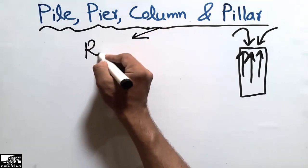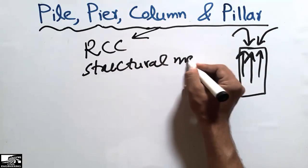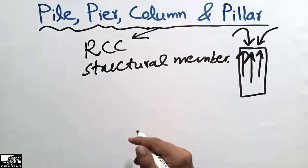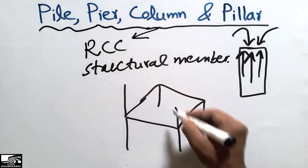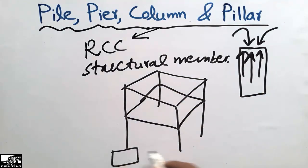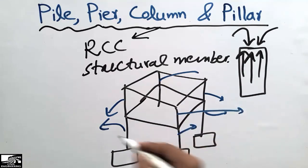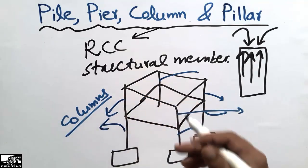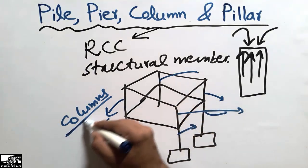Now the column can be defined as an RCC structural member used mostly to resist vertical loads. Columns are used in different structures — for example, in a multi-story building, these vertical members are constructed and are responsible for taking the load and transferring it to the foundation. These vertical members in buildings are known as columns, and they are mostly used in multi-story or low-story residential buildings. Columns are designed according to different codes.